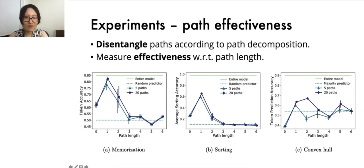We measure the effectiveness of a set of paths using the accuracy of predictions by those paths. As shown here, effectiveness declines significantly with respect to path length, as predicted by theory. And a few paths of short lengths are already quite effective. This implies that self-attention networks behave like an ensemble of shallow networks.